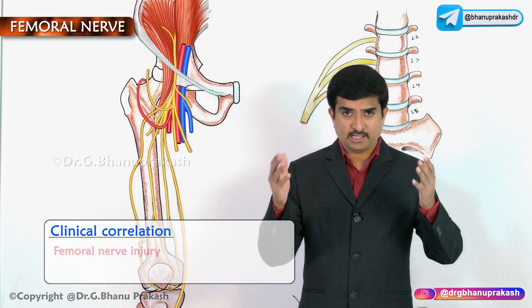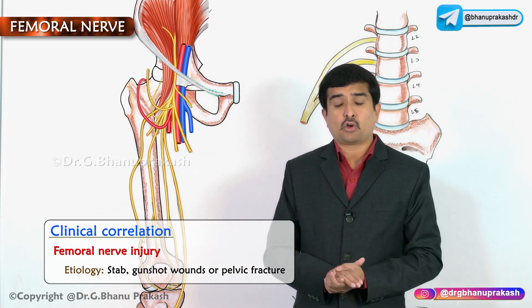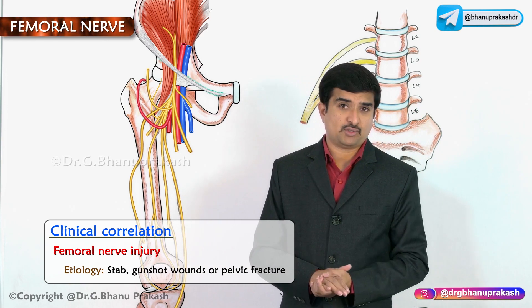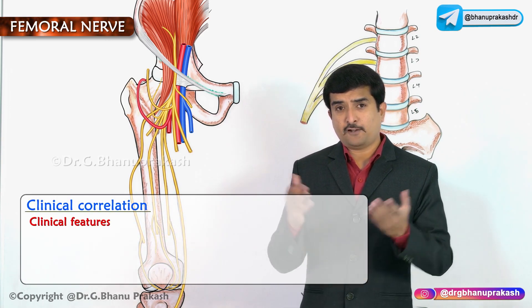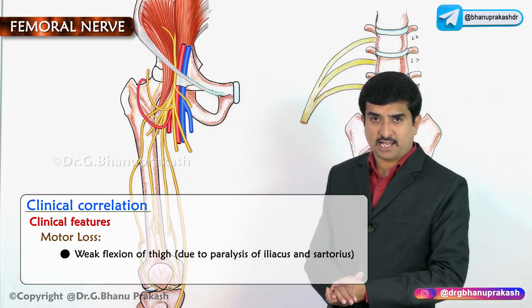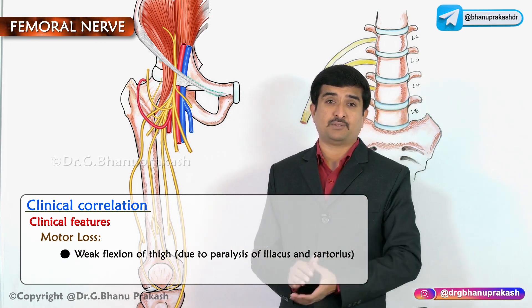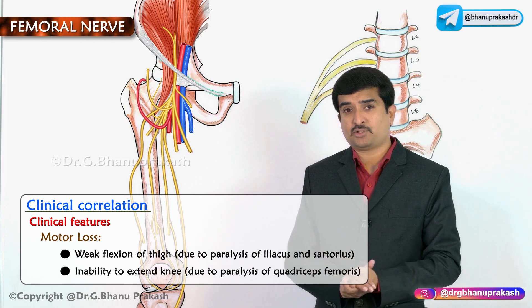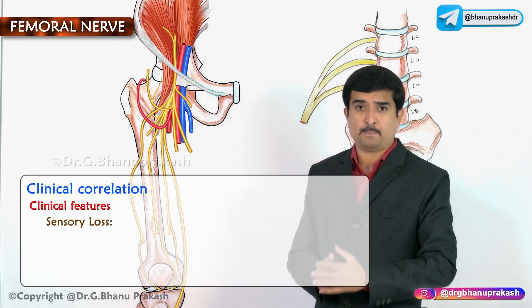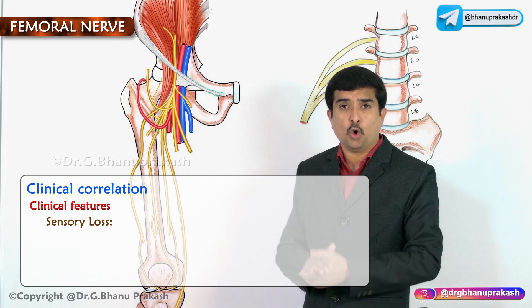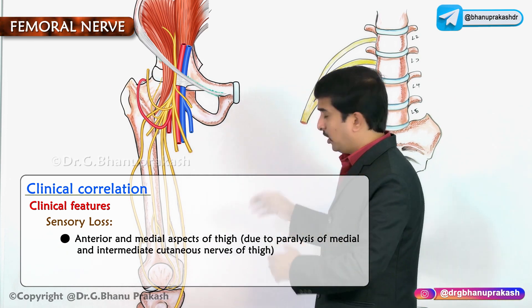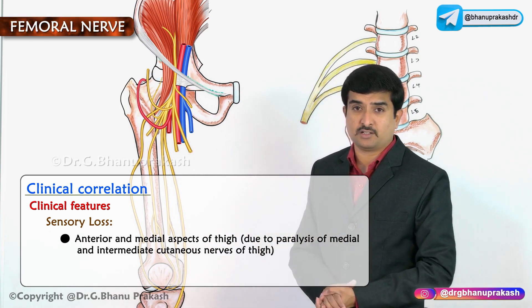For clinical correlation, femoral nerve injury is most commonly associated with stab wounds, gunshot wounds, or pelvic fractures. The clinical features are both motor and sensory in nature. There will be weak flexion of the thigh due to paralysis of the iliacus and sartorius, and the patient is unable to extend the knee mainly due to paralysis of the quadriceps femoris. Sensory loss is seen over the anterior and medial aspects of the thigh due to paralysis of the medial and intermediate cutaneous nerves.